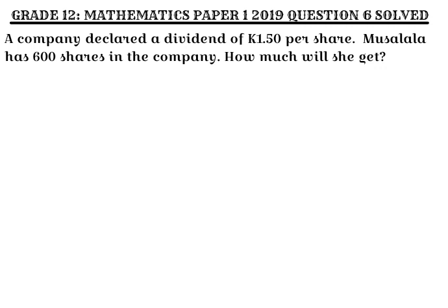First of all, I'm going to write the information given — the data we're going to use on the left side. We have 600 shares and one kwacha fifty ngwe per share. To find how much Musalala got, we need to multiply the shares by the price of a share.